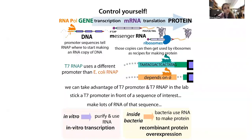Getting on the same page with terminology: the instructions for making a protein are in the form of DNA genes. Messenger RNA copies of that DNA are made in a process called transcription — this is what T7 RNA polymerase is going to do. The messenger RNA then gets used by complexes called ribosomes to make proteins. Messenger RNAs serve as intermediates between DNA and protein. There are also other forms of RNA that act as functional RNA at the RNA level alone.